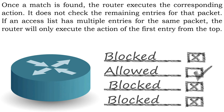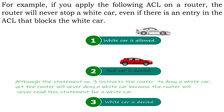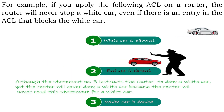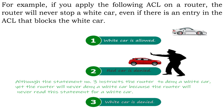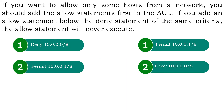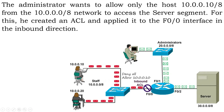The router does not check the remaining entries for that packet. If an access list has multiple entries for the same packet, the router will only execute the action of the first matching entry from the top. For example, if you apply an ACL on a router, the router will never stop a white car even if there is an entry in the ACL that blocks the white car. If you want to allow only some hosts from a network, you should add the allow statements first in the ACL. If you add an allow statement below the deny statement of the same criteria, the allow statement will never execute.